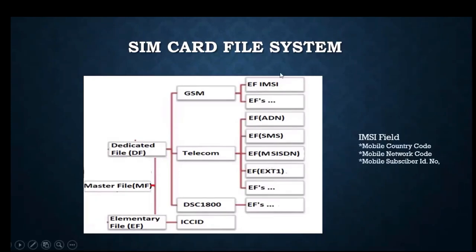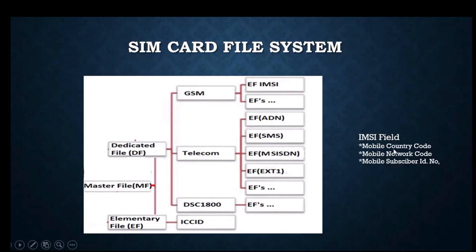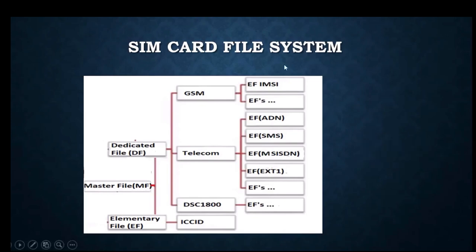Under GSM-related files, one important file is IMSI — International Mobile Subscriber Identity — which is 15 digits. It provides similar information to the ICCID, including Mobile Country Code, Mobile Network Code, and Mobile Subscriber Identity Number. The Mobile Country Code tells where the subscriber is located, and the Mobile Network Code identifies the network service provider.